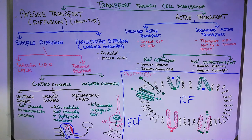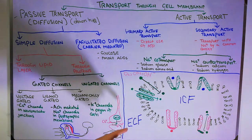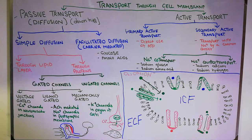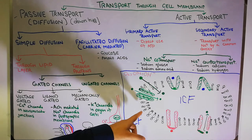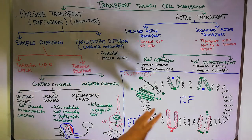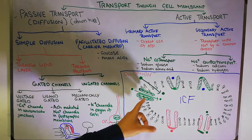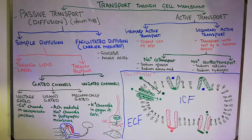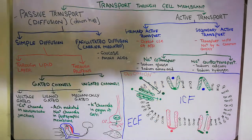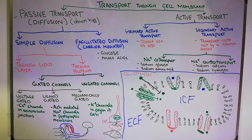Today we are going to discuss cell transport. We have already discussed that the cell is surrounded by a membrane known as the cell membrane or the plasma membrane, which has basically two layers of lipids known as the lipid bilayer and also has different types of proteins. Inside the cell there is fluid known as the intracellular fluid or ICF, and outside the cell there is fluid known as the extracellular fluid or ECF.